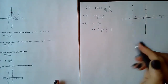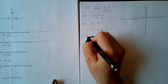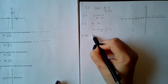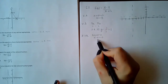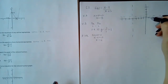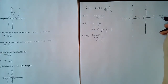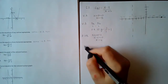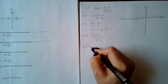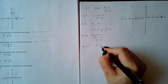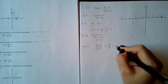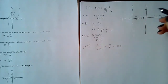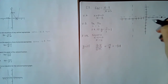For the x-intercept, set the numerator equal to zero: x − 4 = 0, so x = 4. For the y-intercept, plug in x = 0: (0 − 4)/(0 + 5) = −4/5 = −0.8. So I plot the x-intercept at x = 4 and the y-intercept at approximately −0.8.